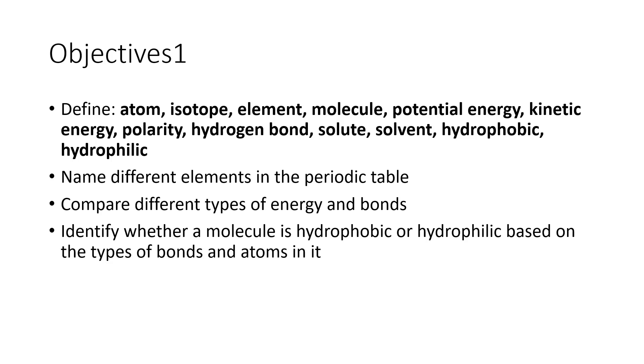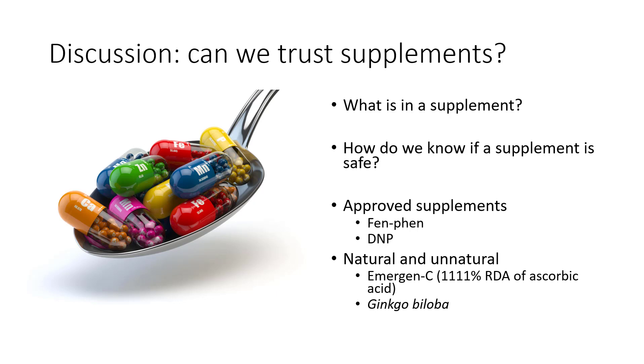If you are not familiar with the terms proton, neutron, and electron, these will also be things you will need to define. Name different elements in the periodic table, compare different types of energy and bonds, and identify whether a molecule is hydrophobic or hydrophilic based on the type of bonds and atoms in it. In class we will have a discussion section, which is absent from this online lecture.